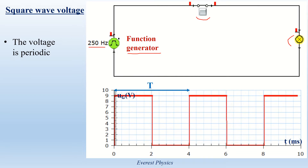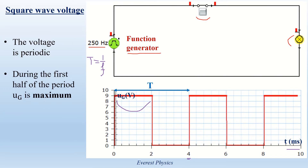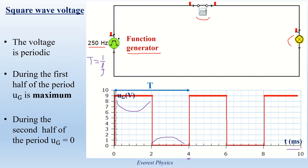This constant time interval is the period of the voltage. The period of the voltage is equal to 1 over the frequency. The frequency of the generator is 250 Hz, so 1 over 250 Hz is 0.004 seconds, which is equal to 4 ms. During the first half period, the voltage is maximum — equal to the amplitude of the function generator, which is 9 V. In the second half period, the voltage is 0. This is the square wave voltage.